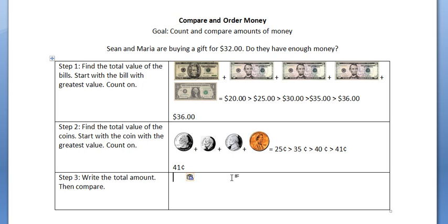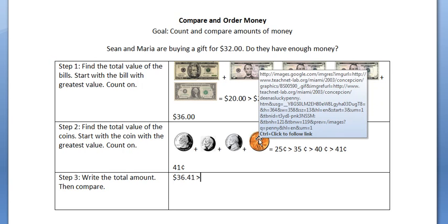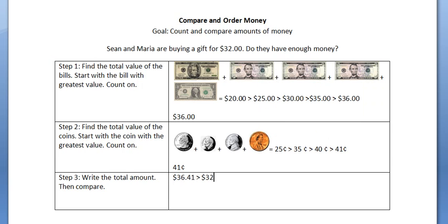Step 3 is to write the total amount: $36.41. And we need to compare it to the gift price, $32. $36.41 is greater than $32. So yes, Sean and Maria have enough money since $36.41 is greater than $32.